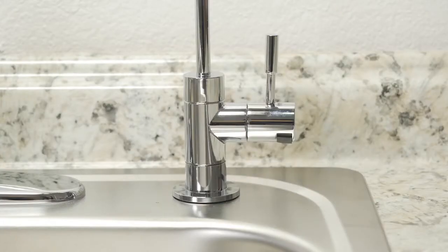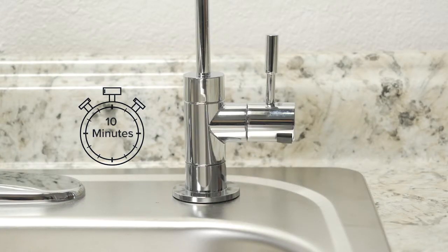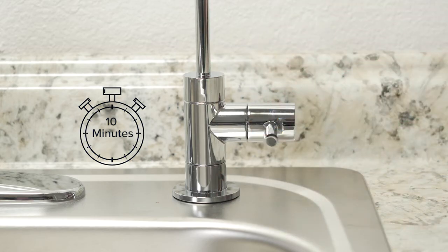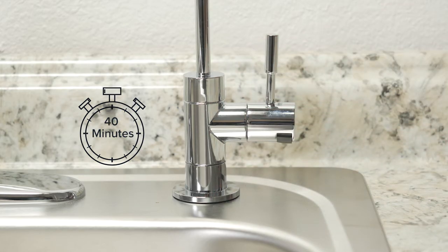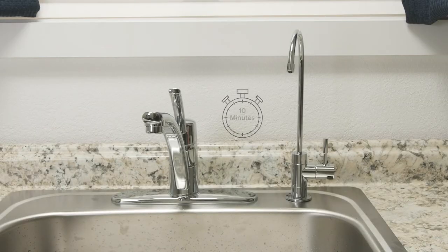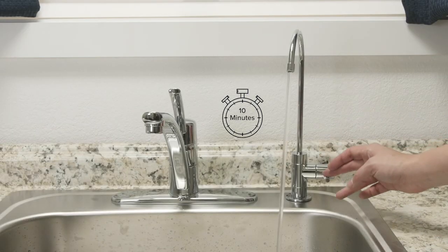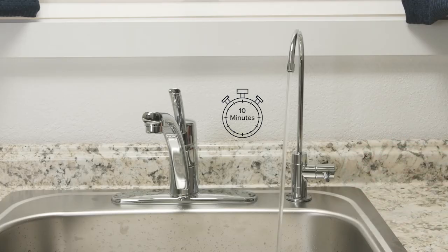Before the first use, turn on the provided faucet for 10 minutes to purge the air out of the system. It is normal for some water to flow out of the faucet during this first purge. Next, turn the provided faucet off for 40 minutes and let the water tank fill. After 40 minutes, turn the faucet on for 10 minutes or until the tank empties to flush the filters on the water tank.